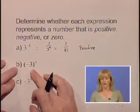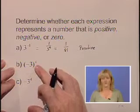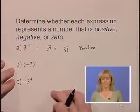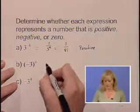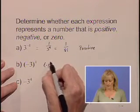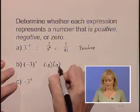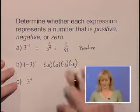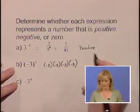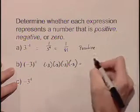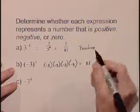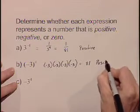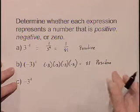Part B. We have the quantity of negative 3 raised to the fourth power. Notice that the negative sign is contained within the parentheses. We could stretch this out, and notice that that would be negative 3 times negative 3 times negative 3 times negative 3. We have an even number of negative signs. This results in positive 81. So we'll indicate that as a positive number.